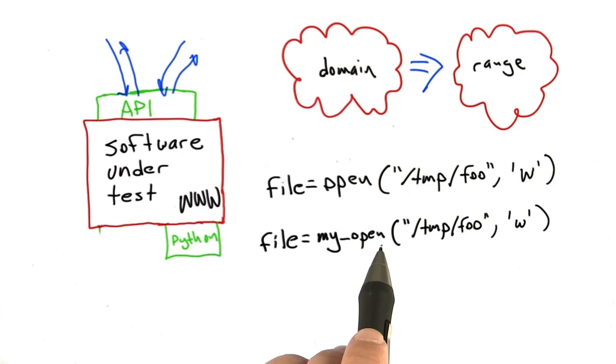So one thing we might do in myopen is have it initially succeed, maybe for the first 100 calls, and after that, it might do something like fail 1% of the time. So that's just an example.